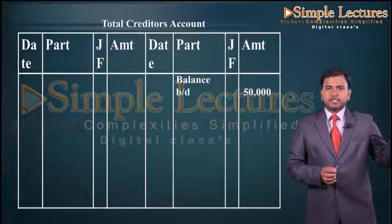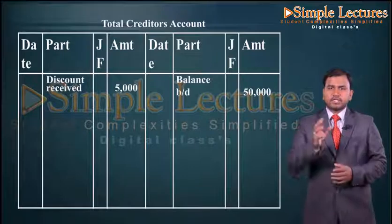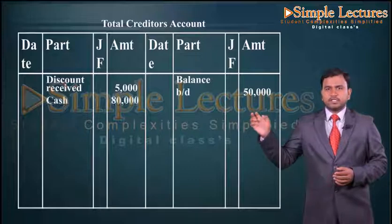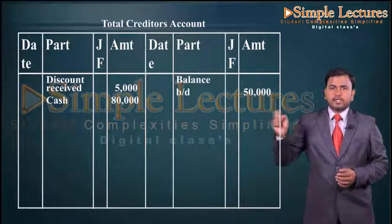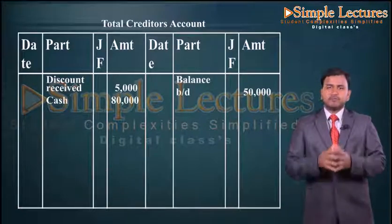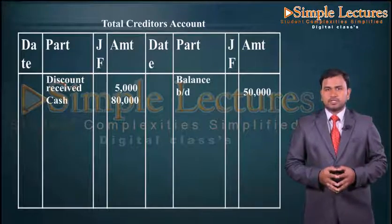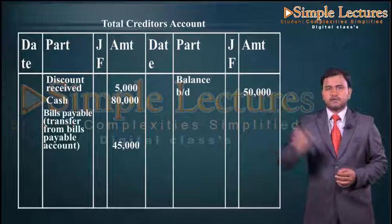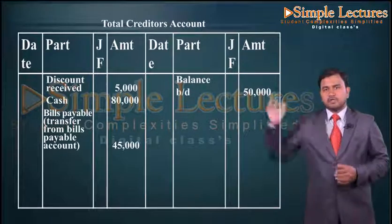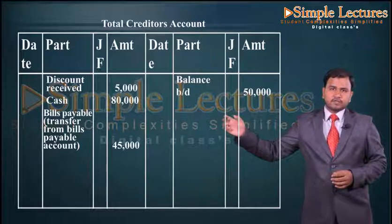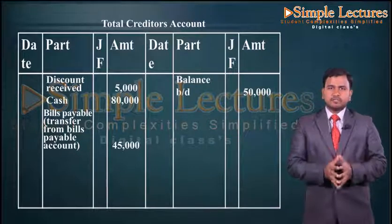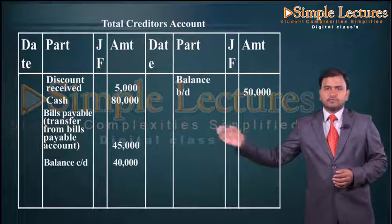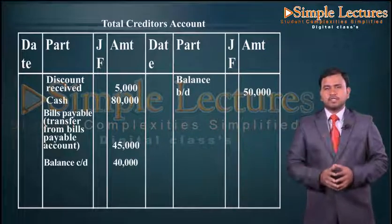Then we are going to record the discount received on the debit side: discount received five thousand. Then the cash payment made is recorded on the debit side: cash eighty thousand. Then we have a transfer from bills payable account, again on the debit side: bills payable — in bracket, transfer from bills payable account — forty five thousand in the outer column. Then the closing balance, given in the illustration: balance carried down forty thousand.